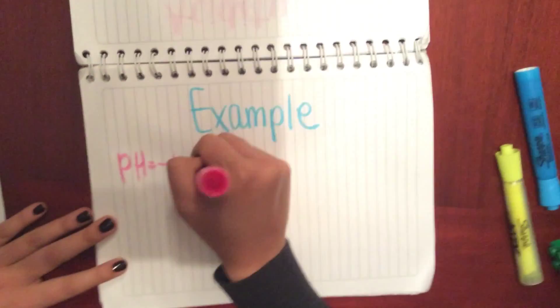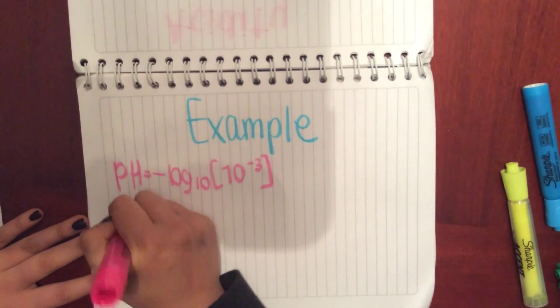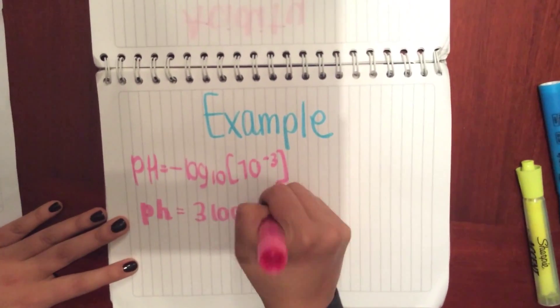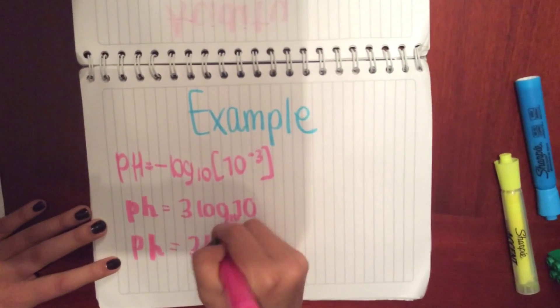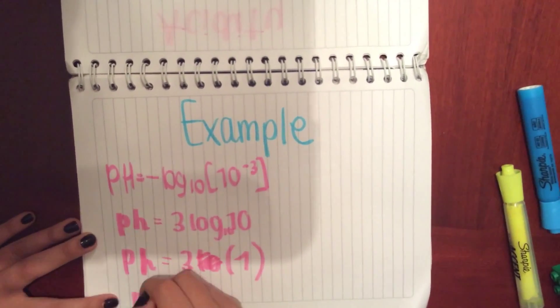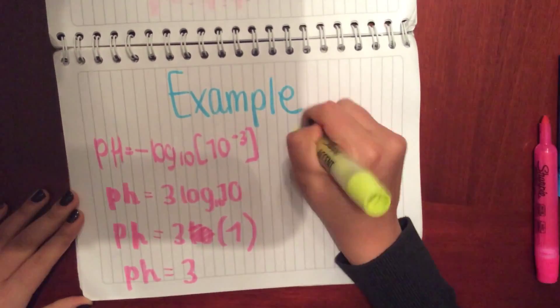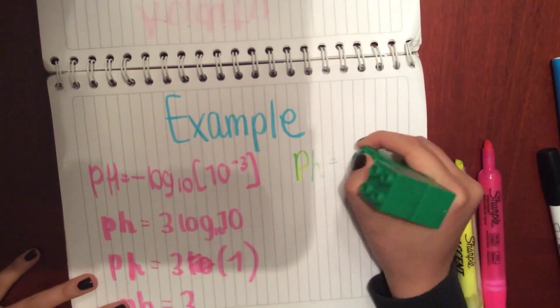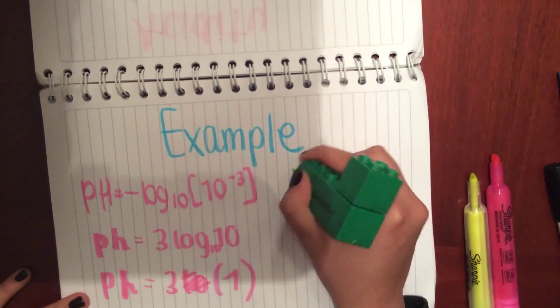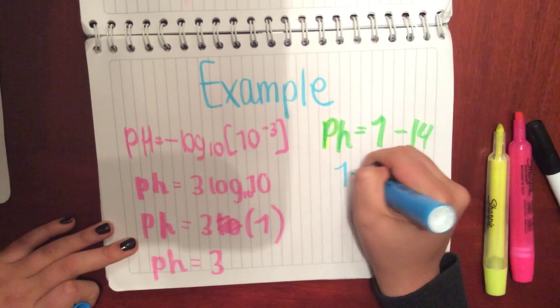H plus will be the molar concentrations of dissolved hydrogen ions. For example, we replaced H plus with 10 to the minus 3 and we solved it, which will give us an answer of pH equals 3. pH is measured from 1 to 14, 1 to 7 being an acid and 7 to 14 a base. Therefore, we can say that this is an acidic substance.